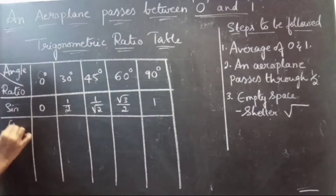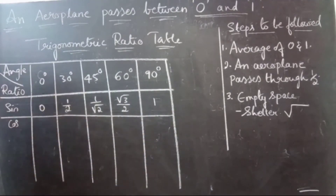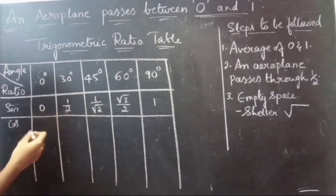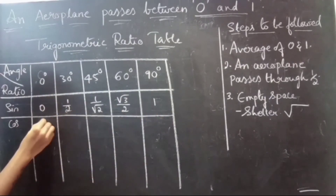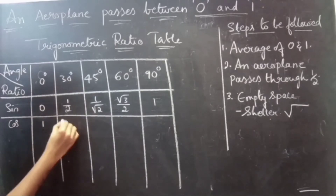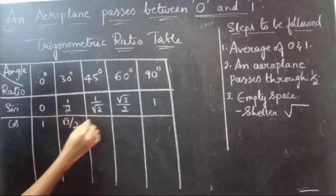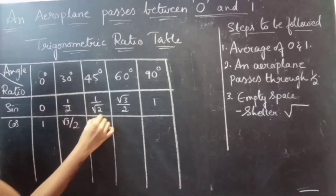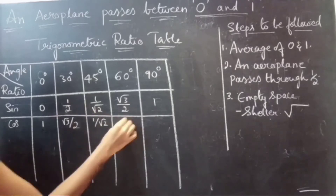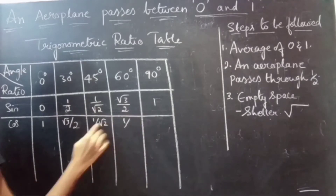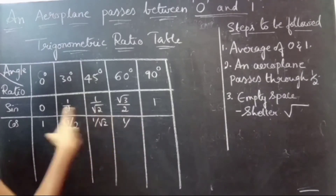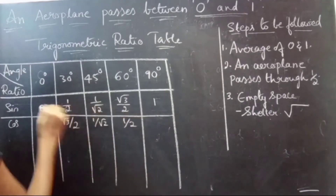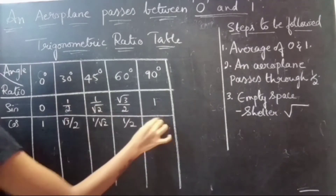Now write for cosine. Just write the sine values in reverse order: 1, root 3 by 2, 1 by root 2, 1 by 2, and 0.